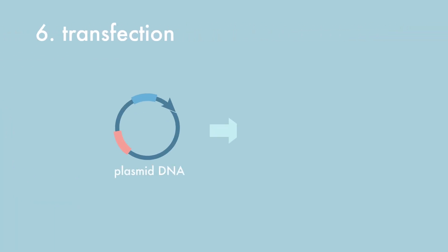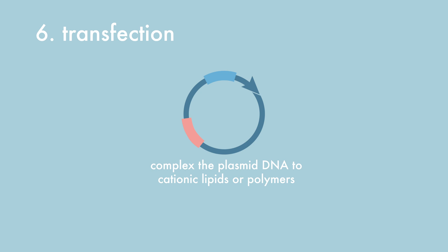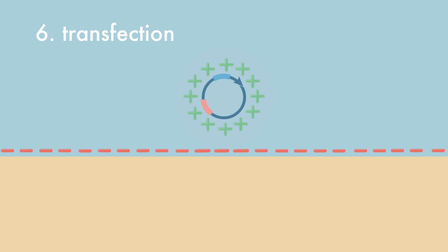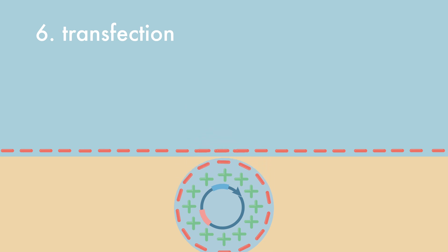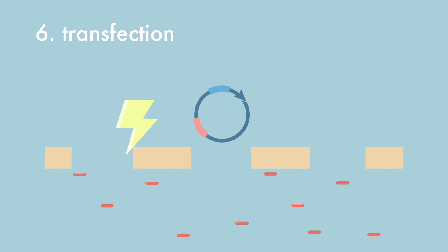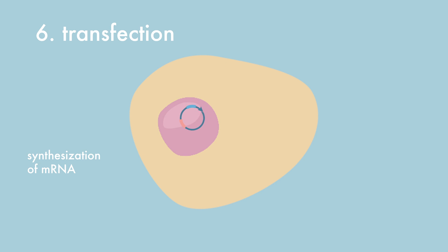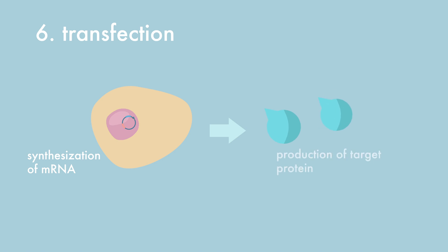The plasmid DNA is then introduced into a mammalian cell through a process called transfection. There are multiple ways to perform transfection. One way is to complex the plasmid DNA with cationic lipids or polymers, forming positively charged aggregates that bind to negatively charged cell membranes, and the plasmid DNA is endocytosed. The other way is through electroporation, where an electric pulse is applied to the cells resulting in the formation of small pores in the plasma membrane through which the plasmid DNA can enter the cell. After transfection, the plasmid DNA finds its way to the nucleus where mRNA will be synthesized, eventually leading to the production of the recombinant target protein.